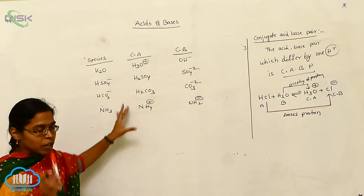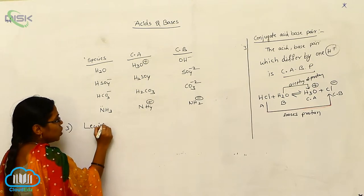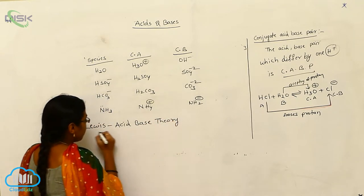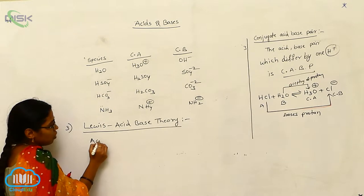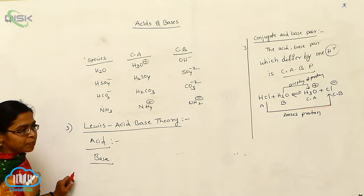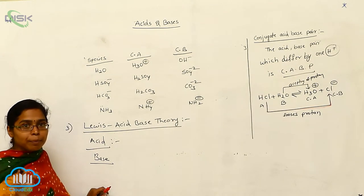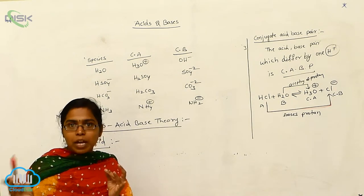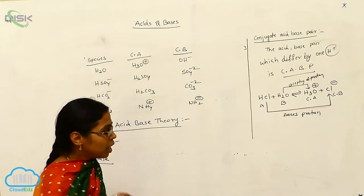Now the third theory is the Lewis acid-base theory. The Arrhenius theory depends on compounds dissolving in water, the Brønsted theory depends on protons, and the Lewis acid-base theory depends on electron pairs.